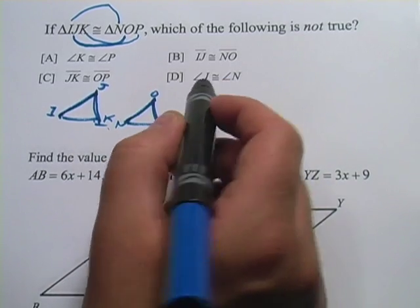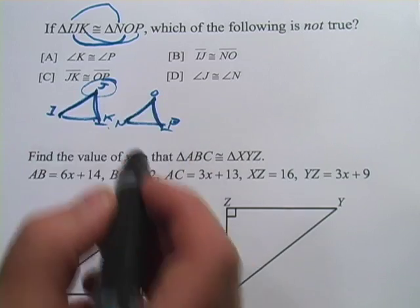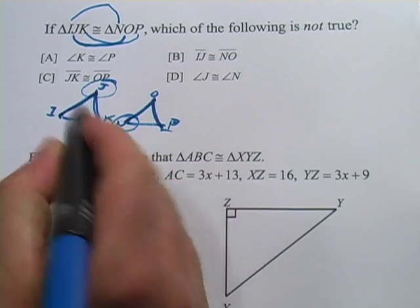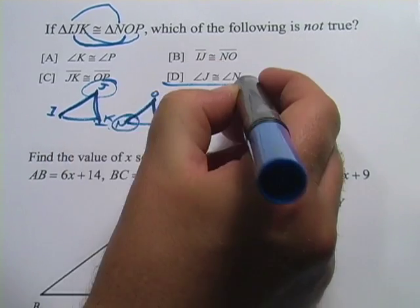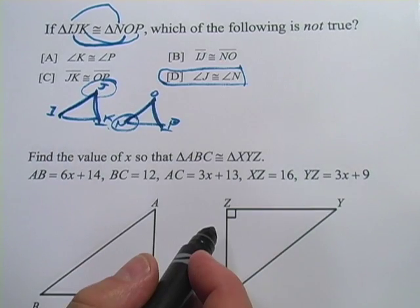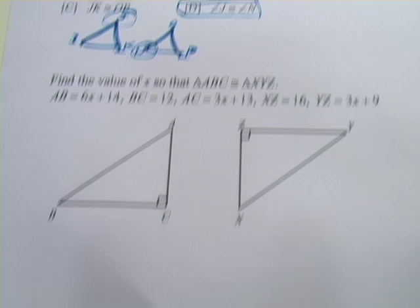And then D says angle J is congruent to angle N, so here's angle J, and here's angle N. Definitely not corresponding parts, so this is our one that's not true. All right, one more.